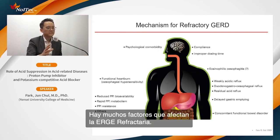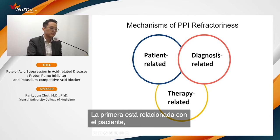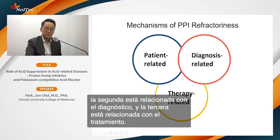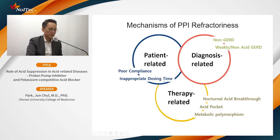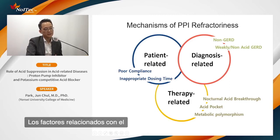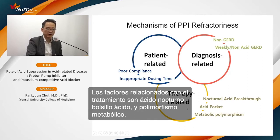There are many reasons for developing refractory GERD: psychosocial comorbidity, poor PPI compliance, functional heartburn, PPI bioavailability issues, disease category like eosinophilic esophagitis, and reflux characteristics like weakly acid or non-acid reflux. I'll discuss three categories of PPI failure mechanisms: patient-related, diagnostic-related, and therapy-related. Therapy-related factors include nocturnal acid breakthrough, acid pocket, and metabolic polymorphism.